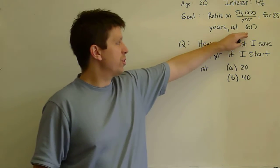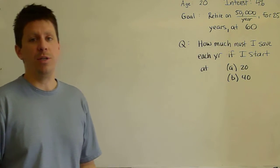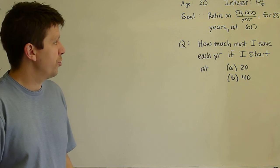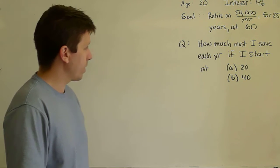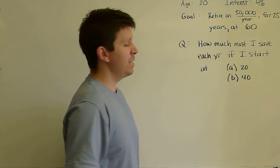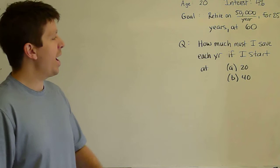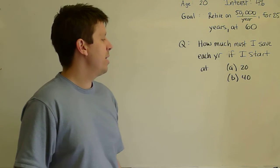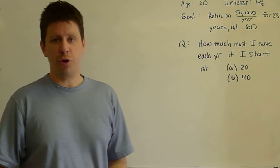starting at age 60, and ideally you live to be 25 years to your average age of about 85 in this country. So the question then is how much must I save every year to have enough money to do that if I have these two different starting points?